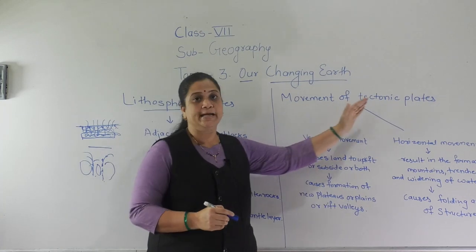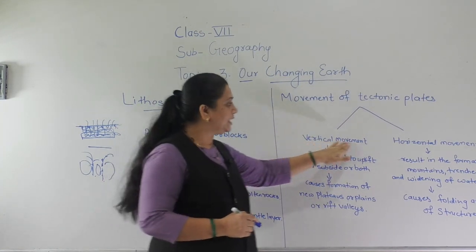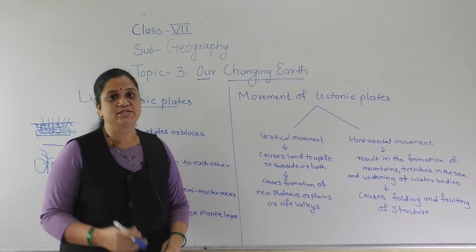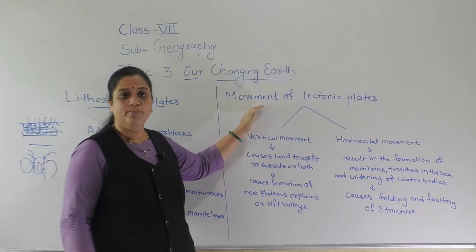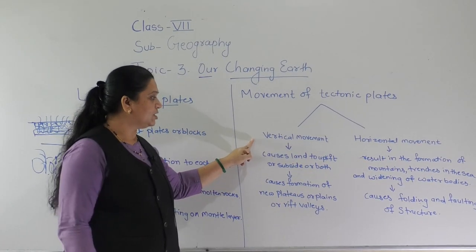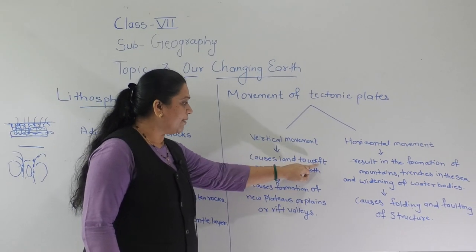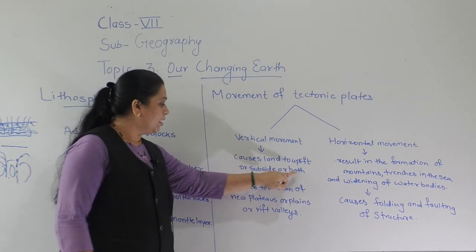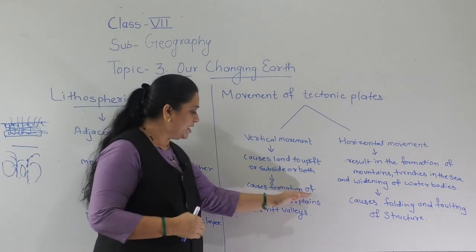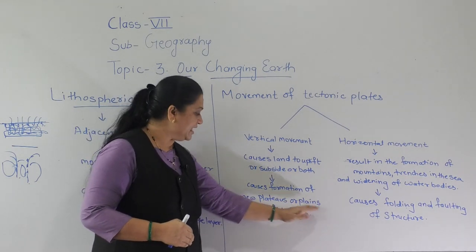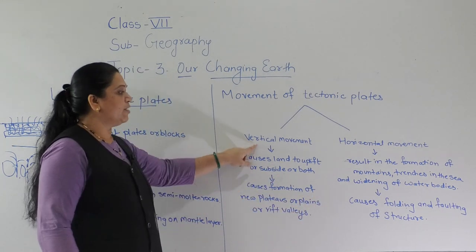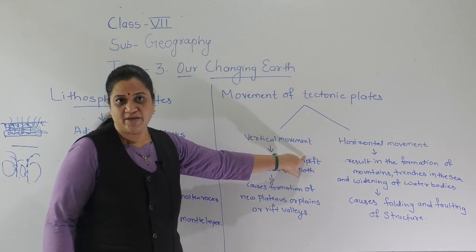The movement of lithospheric plates is divided into two types: vertical movement and horizontal movement. This is not mentioned in your textbook, but for extra knowledge I am explaining the movements of tectonic plates. Vertical movement causes the land to uplift or subside, or both, resulting in the formation of new plateaus, plains, or rift valleys.